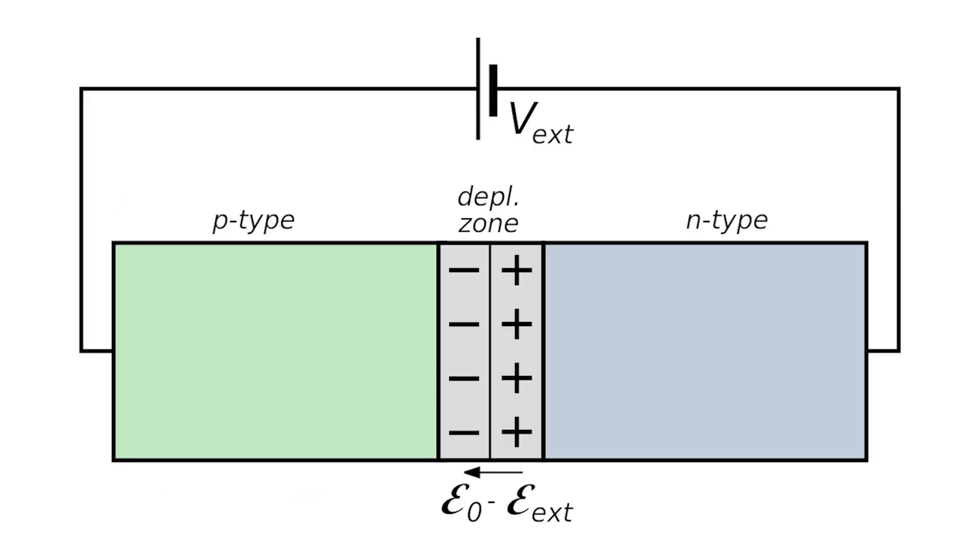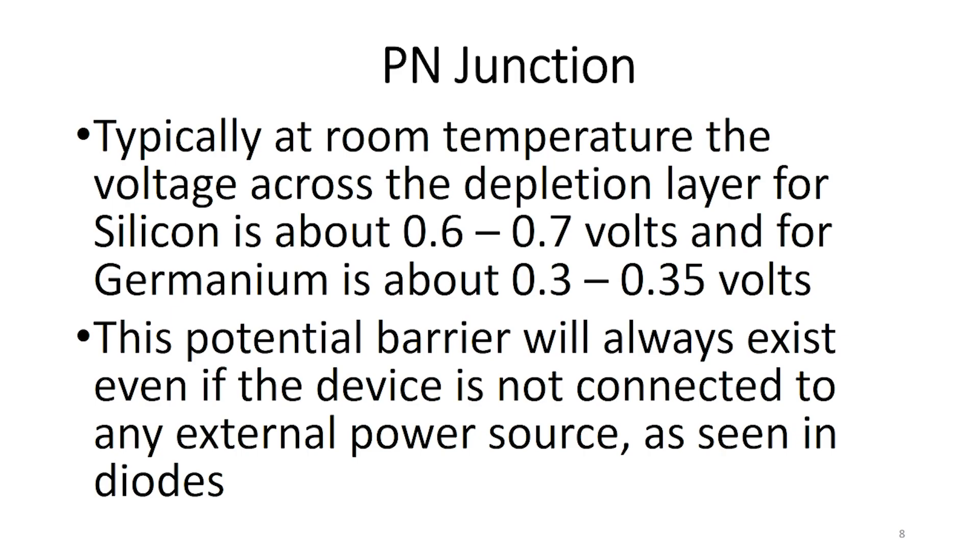A suitable positive voltage, forward bias, applied between the two ends of the p-n junction can supply the free electrons and holes with the extra energy. The external voltage required to overcome this potential barrier depends upon the type of semiconductor material used and its temperature. Typically at room temperature, the voltage across the depletion layer for silicon is about 0.6 to 0.7 volts and for germanium is about 0.3 to 0.35 volts. This potential barrier will always exist even if the device is not connected to any external power source, as seen in diodes.